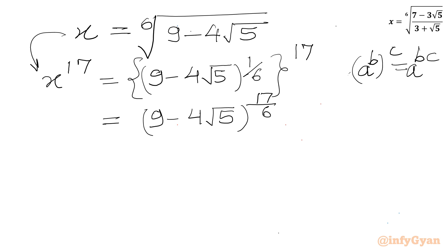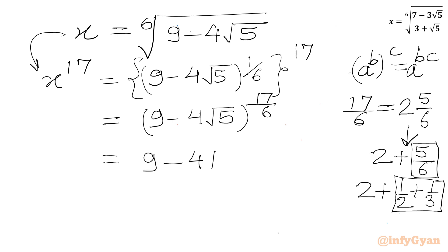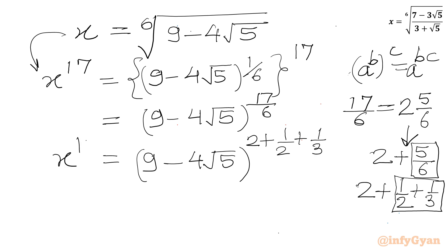Now I will find the mixed fraction. 17 over 6 can be written as 2 whole 5/6, which is 2 plus 5/6. This 5/6 can be written as 1/2 plus 1/3. So the power is 2 plus 1/2 plus 1/3, and this is our required expression for x power 17.